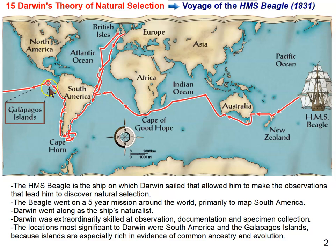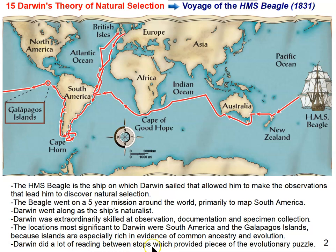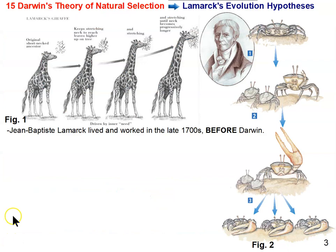Darwin wasn't the only one that came up with the idea of evolution by natural selection, but we'll come upon that other person farther along. Darwin did a lot of reading in between stops. As the story goes, he was very seasick the entire voyage. On one of these old sailing vessels, it took a long time to go anywhere, and it was a five-year voyage. One of the people that Darwin read about before his voyage was Jean-Baptiste de Lamarck, who lived in the 1700s, before Darwin. Lamarck had an idea of how species change over time too.